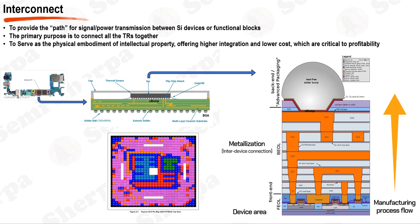Inside the die, the interconnection journey continues with the back-end-of-line, BEOL, process, responsible for creating the metal layers that interconnect the transistors. These metal layers serve as the wiring for the chip, providing signal and power transmission between functional blocks and transistors. The interconnect layers are built up in a sequence of deposition, patterning, and etching steps, creating a complex three-dimensional network of wires at the nanometer scale. The transistors themselves are created during the front-end-of-line, FEOL, process and are connected to BEOL layers through contacts and vias.